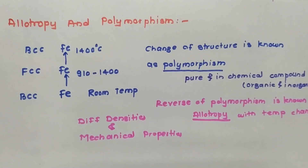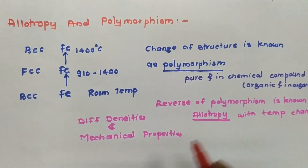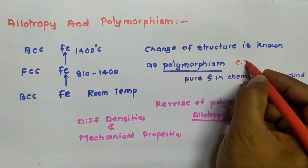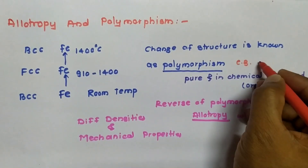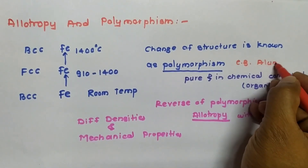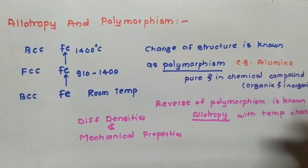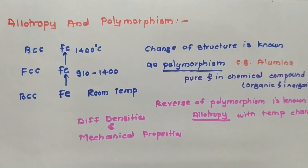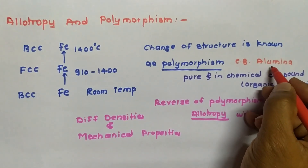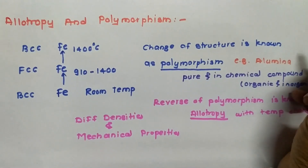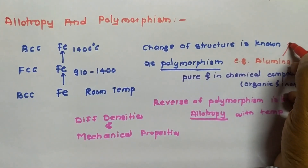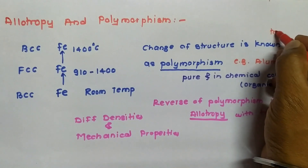For an example of polymorphism, consider alumina. Alumina has polymorphs: the trigonal alpha phase at room temperature, and the cubic phase at 773 Kelvin.